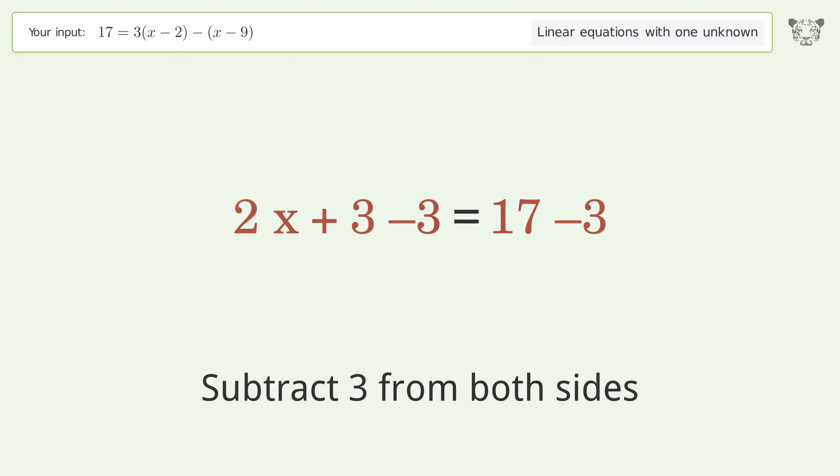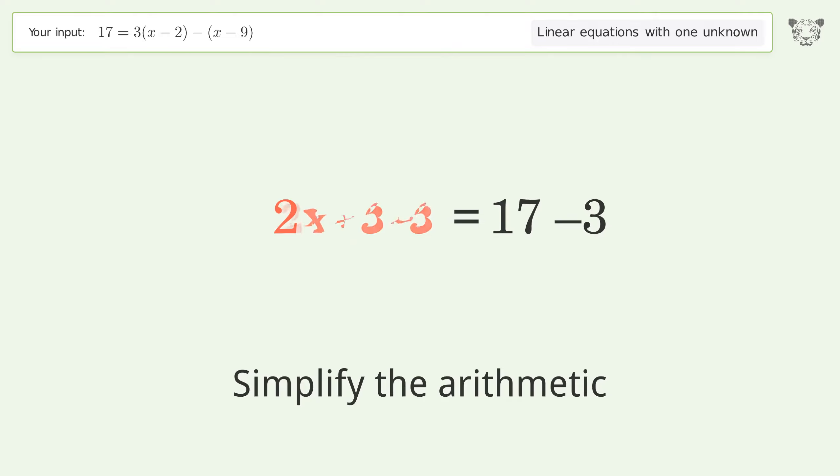Group all constants on the right side of the equation. Subtract 3 from both sides. Simplify the arithmetic.